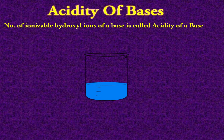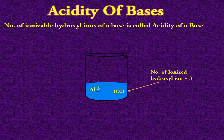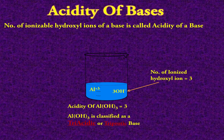Let's see one more example: aluminium hydroxide, Al(OH)₃. When this base is dissolved in water, it gives 3 hydroxyl ions and an aluminium ion with a plus 3 charge. The number of ionized hydroxyl ions is 3, so the acidity value of aluminium hydroxide is 3, and therefore it is classified as a triacidic or triprotic base.